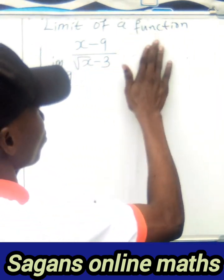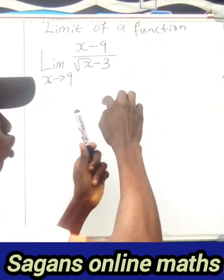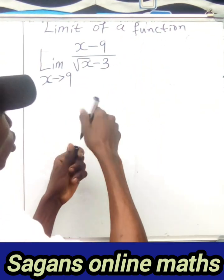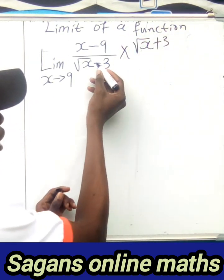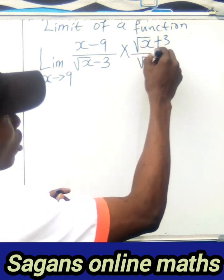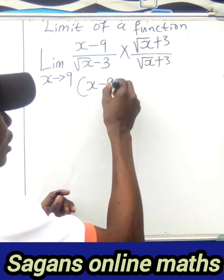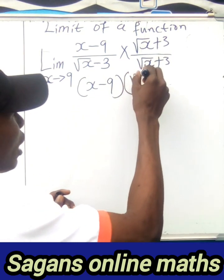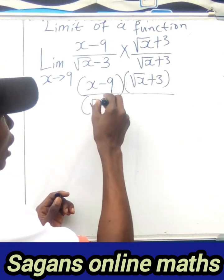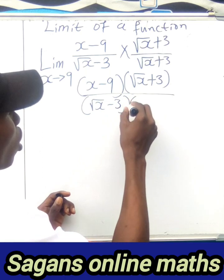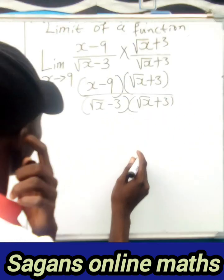I'll show you two methods. For Method 1, when you have this form, what you do is multiply both the numerator and the denominator by the conjugate of the denominator. Since the denominator has (√x minus 3), the conjugate is (√x plus 3). So we multiply by (√x plus 3) over (√x plus 3).